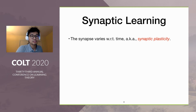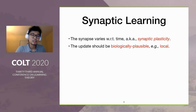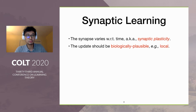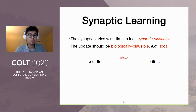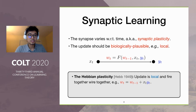In biology, synapse can vary with respect to time, and this is known as synaptic plasticity. However, such an update cannot be arbitrary — it has to be biologically plausible. For example, it should be local in the following sense: the weight update should only depend on the potential of the end neurons and the previous weight. This is formally known as Hebbian plasticity, a famous rule stating that neurons who fire together will wire together.